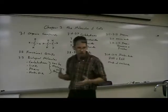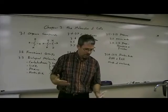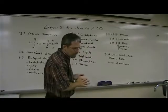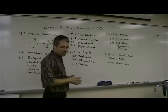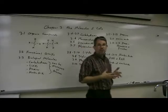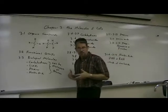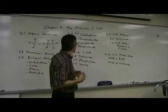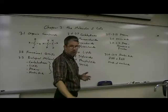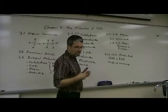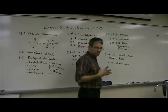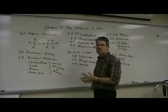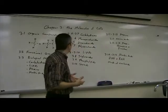Carbohydrates include the sugars and the starches. They're mainly an energy source, but not always. Monosaccharides are simple sugars; examples include glucose, fructose, and galactose. Disaccharides are sugars made of two monosaccharides. Examples of disaccharides include sucrose, which is table sugar; lactose, which is found in milk; and maltose, which is found in grains.